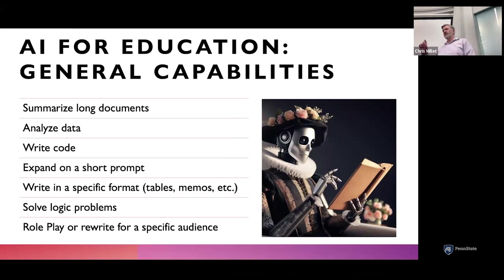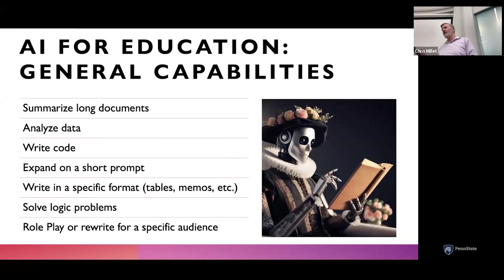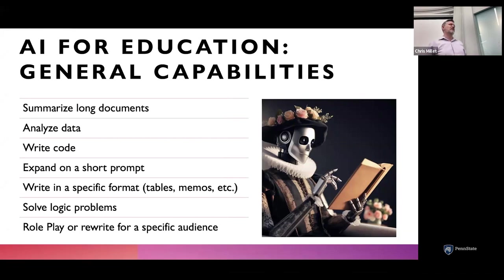AI can also solve logic problems. One example Microsoft talked about: you can go in and say 'here's a list of objects in the real world — stack these in the optimal way so they don't fall over.' Why would a language model understand how to do that? But a lot of times it gets most of it right. So you can imagine it's actually doing something more than just spitting knowledge back — it's applying some sort of logic or reasoning to that process.